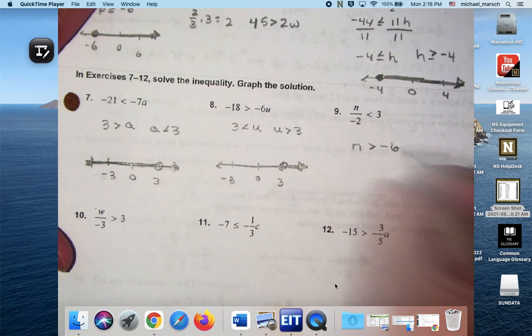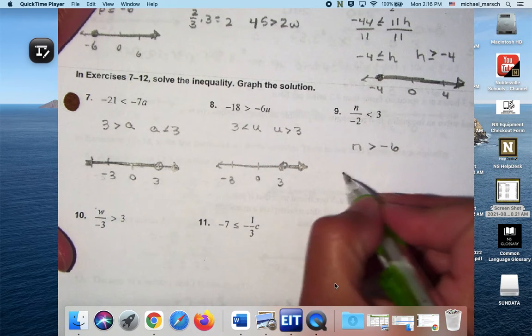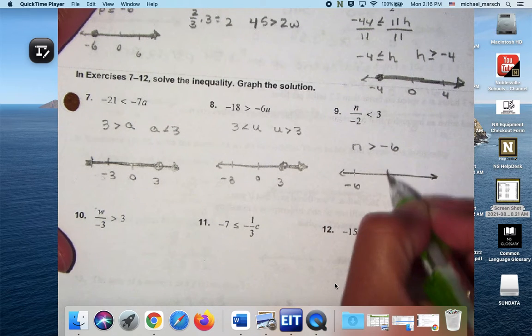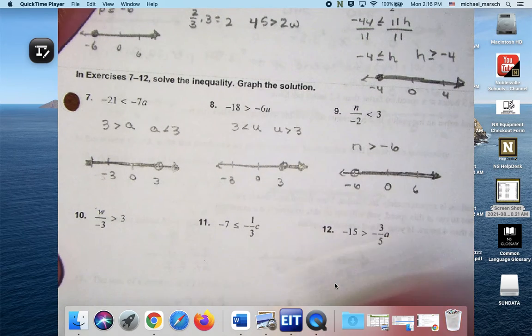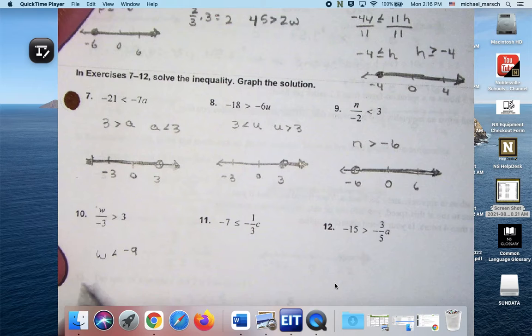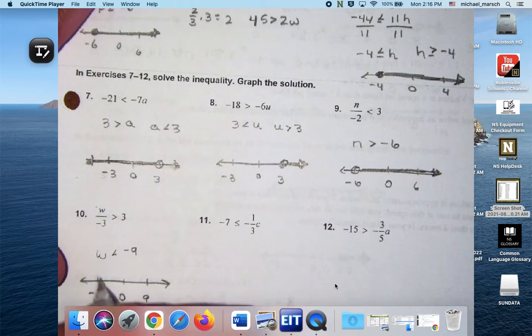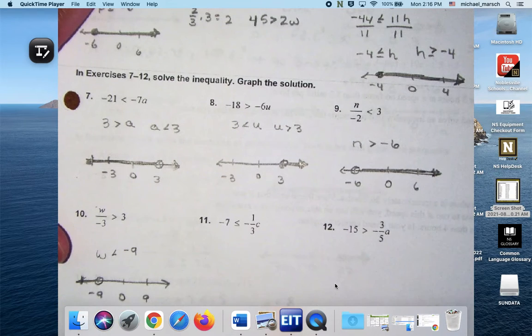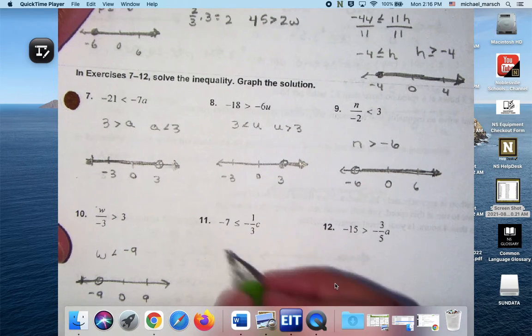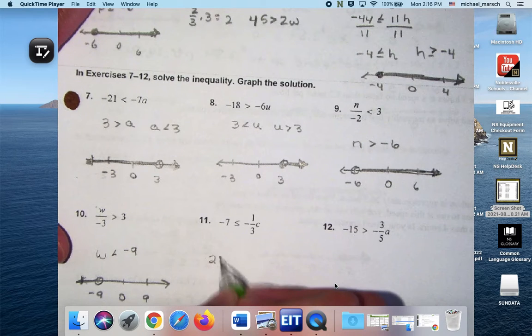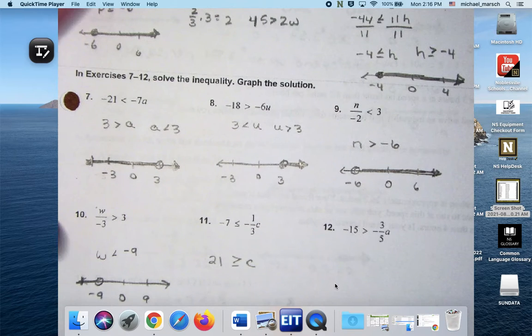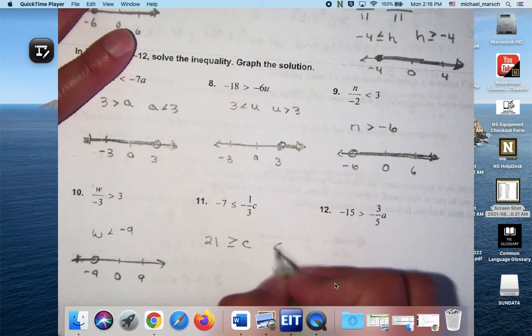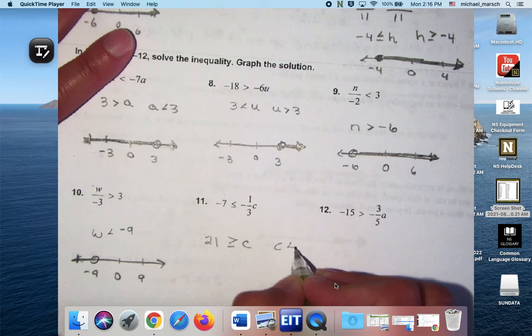N is greater than negative 6. I don't have to do anything else there. Okay. W is less than negative 9. 21 is greater than or equal to C. Does that seem right? Yeah. So then I would say C is less than or equal to 21.